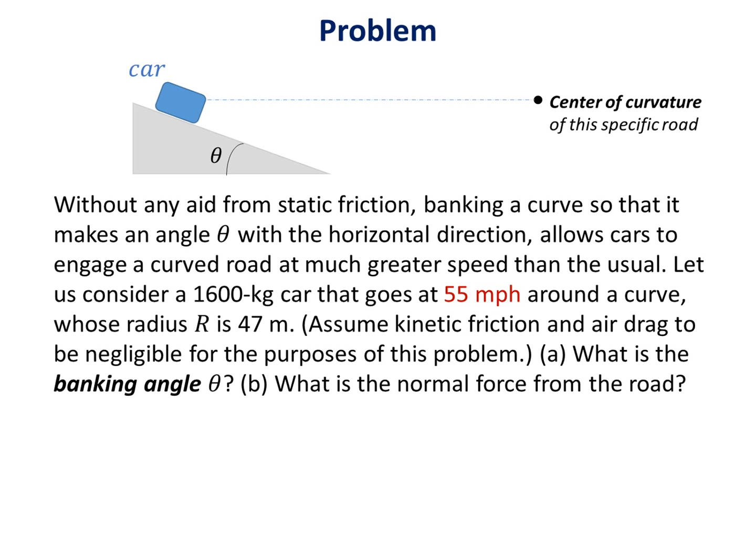Let's consider a 1600 kg car that goes at 55 mph around the curve, whose radius r is 47 m. Please note in the figure we put the center of curvature of the road. That determines the length of the radius r.